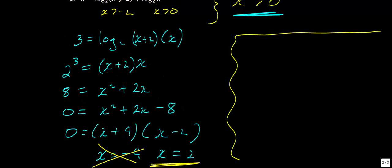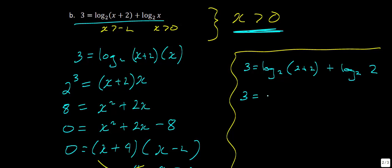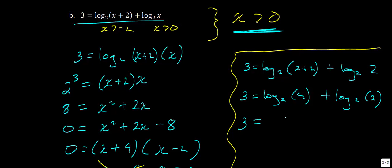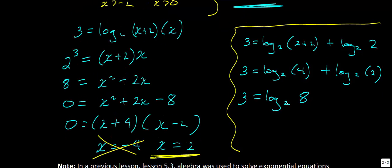Let's briefly check: substituting x equals 2, we have 3 equals log base 2 of 4 plus log base 2 of 2. Using the product rule, log base 2 of 4 times 2 equals log base 2 of 8. Since 2³ equals 8, log base 2 of 8 equals 3. So 3 equals 3 — that one is confirmed.